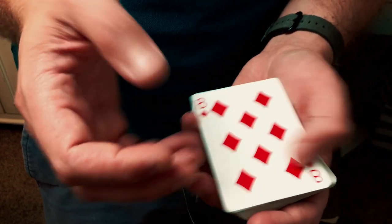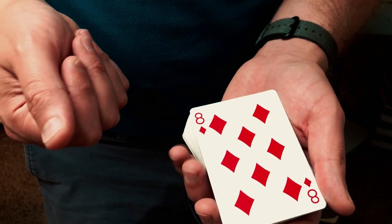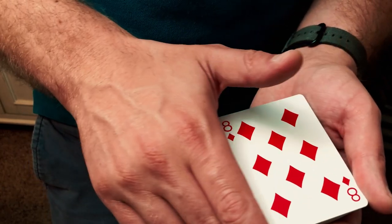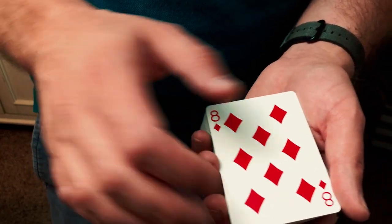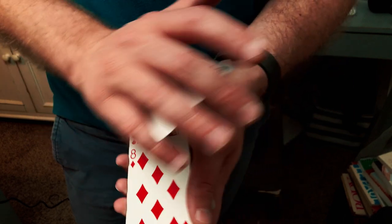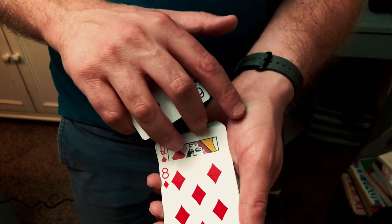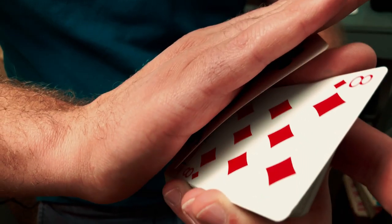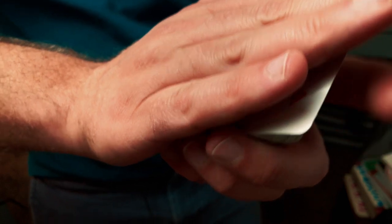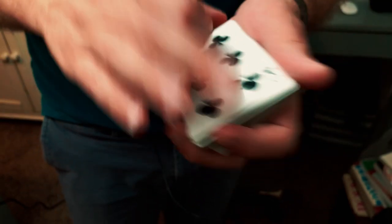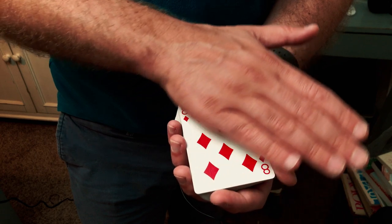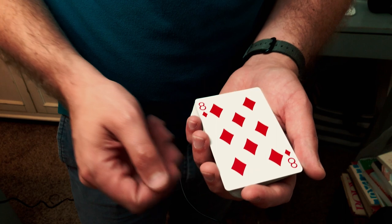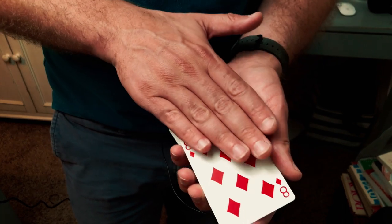So all that's really happening in this version of the Erdnase color change, or my version of the Erdnase color change, is I'm coming up to the left and then depositing down over top like that in a sweeping motion. And then it's resting on this part of my thumb on my left hand. It just rests there, and then it slides down and over, and then it's deposited as the index finger squares the card below it. So it looks like all of this is just the get ready, and the magic moment takes place here instead of being one solid block of me rubbing the card.